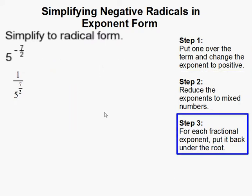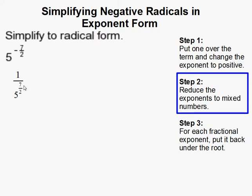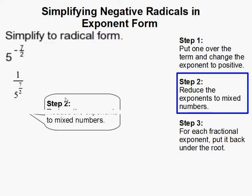So now we just reduce this as if it was just by itself. We need to convert this to mixed numbers here, so 7 halves becomes 3 and 1 half.